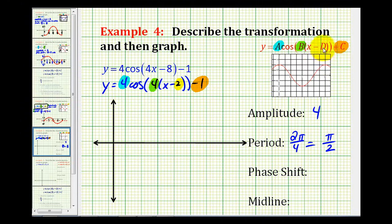Next, the phase shift is determined by D. And since D is equal to 2 to fit this form, the phase shift will be 2 units to the right. Remember, it's tempting because we see x minus 2 to say 2 units left, but it's actually 2 units to the right.